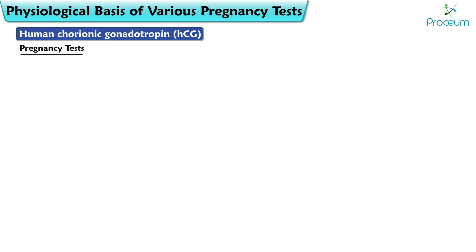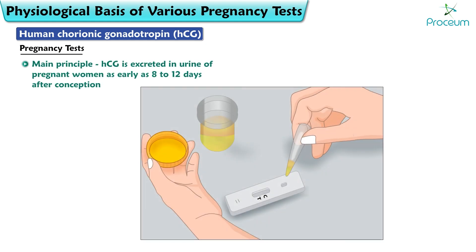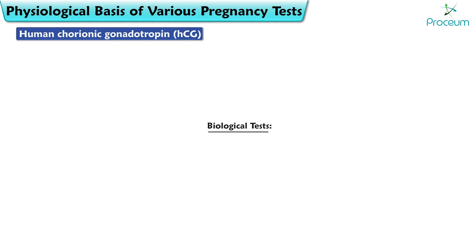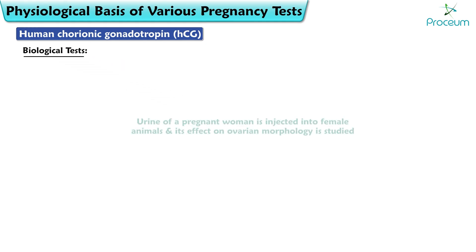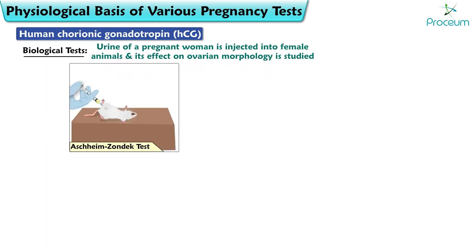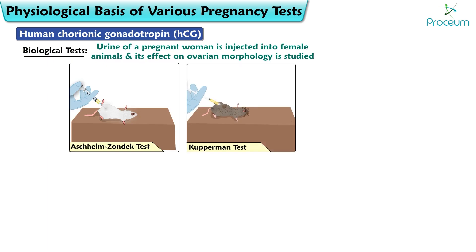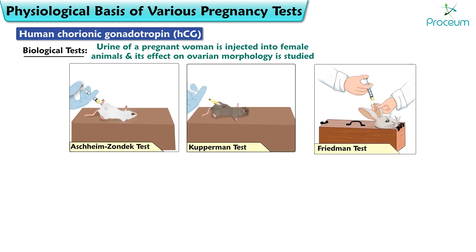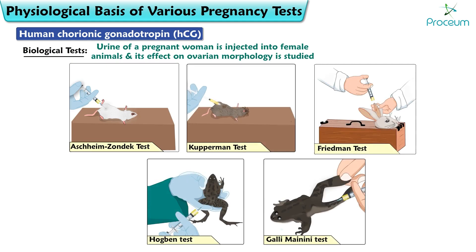Pregnancy Test. The main principle behind all the tests of pregnancy is that human chorionic gonadotropin is excreted in the urine of pregnant women as early as 8 to 12 days after conception. Biological Test: urine of a pregnant woman is injected into female animals and its effect on ovarian morphology is studied. Various tests include Aschheim-Zondek Test, Kupperman Test, Friedman Test, Hogben Test, and Galli-Mainini Test.